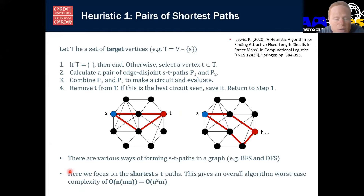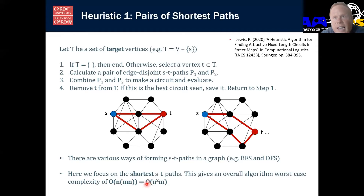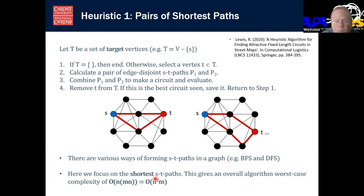In the worst case, we have to run a shortest path algorithm n times. The shortest path problem involves negative weighted edges, so we have to employ the Bellman-Ford algorithm, which is order n times m. If we do that n times, we end up with O(n²m) complexity, which is quite high. But I hope I'll convince you in a few minutes that even though that's quite high worst-case complexity, we can actually get some quite quick runtimes.